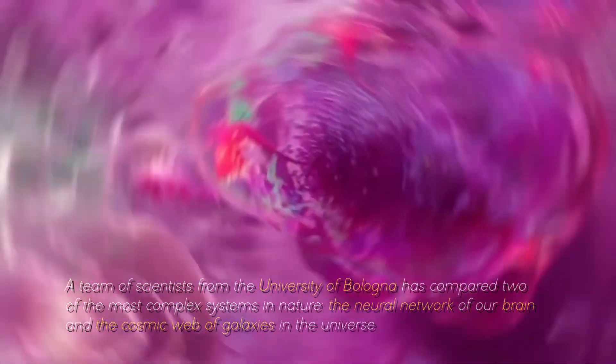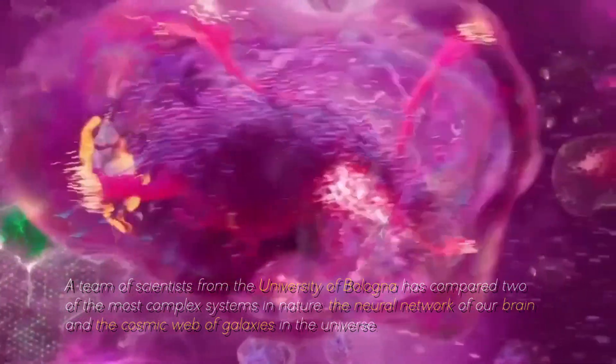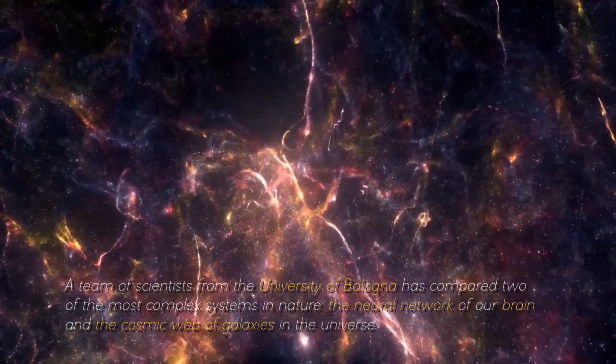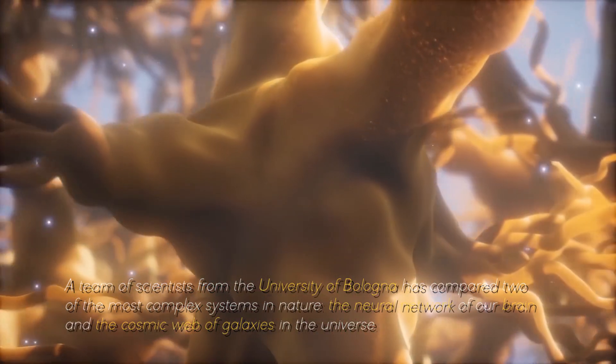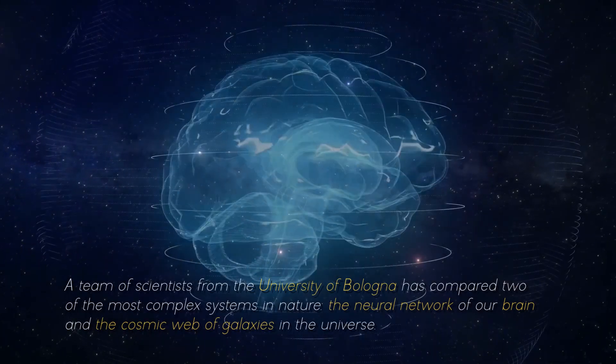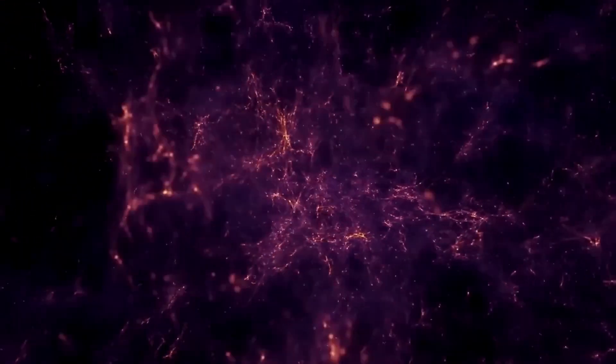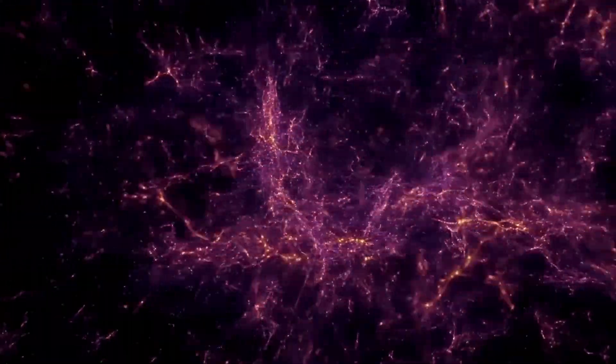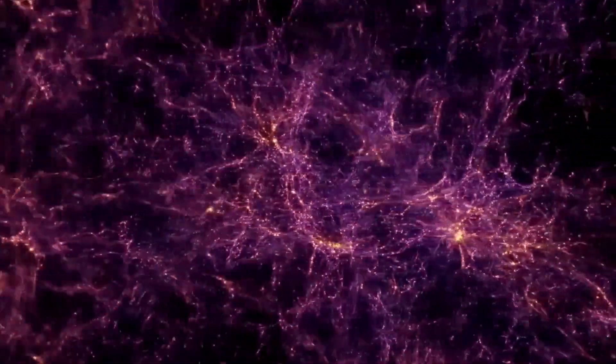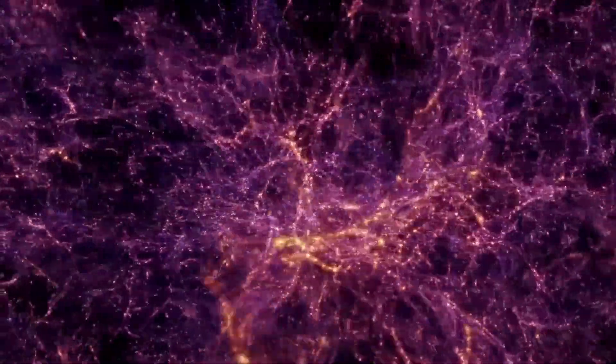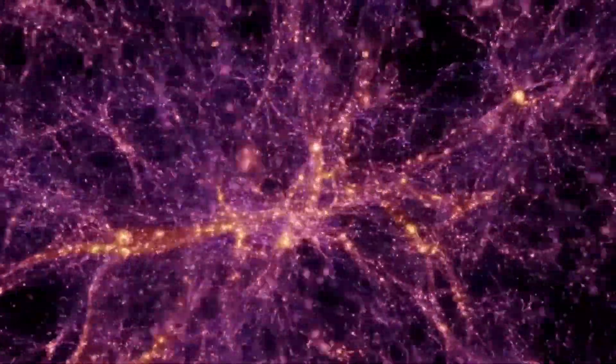A team of scientists from the University of Bologna has compared two of the most complex systems in nature, the neural network of our brain and the cosmic web of galaxies in the universe. What did they discover? That they are incredibly similar. And not just as they look if we compare a human neuron with a cluster of galaxies. There's more.